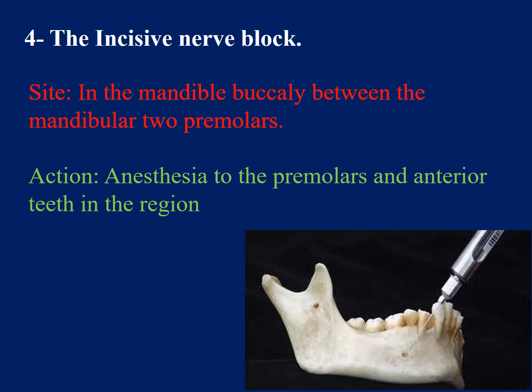The incisive nerve block site in the mandible is buccally between the mandibular two premolars. Its action provides anesthesia to the premolars and anterior teeth in the region.